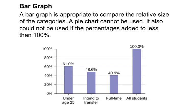Another way is looking at bar graphs. Notice that this graph does not add up to 100%, and that's fine because the groups do not have to be disjoint — you could be in one or multiple groups.